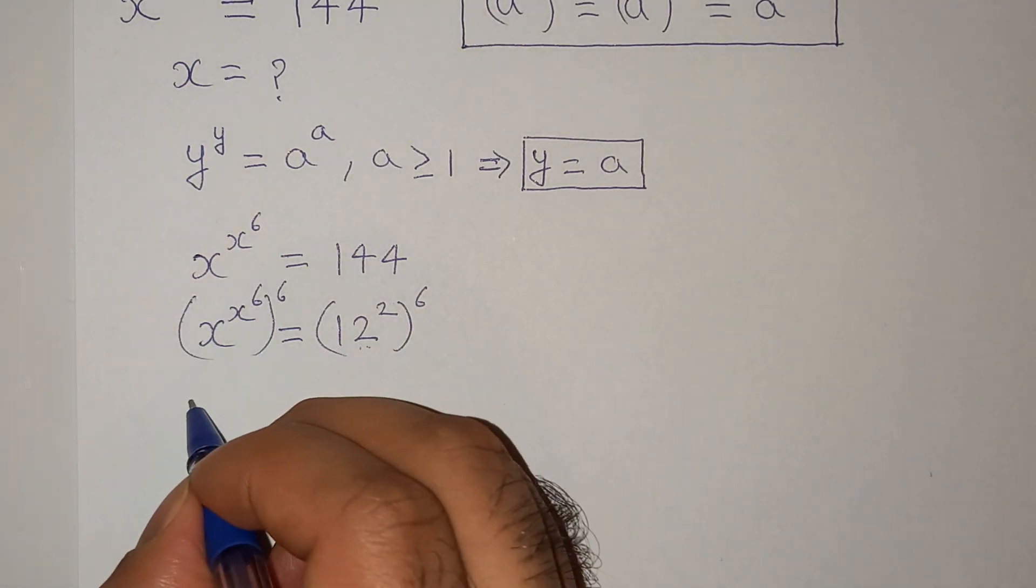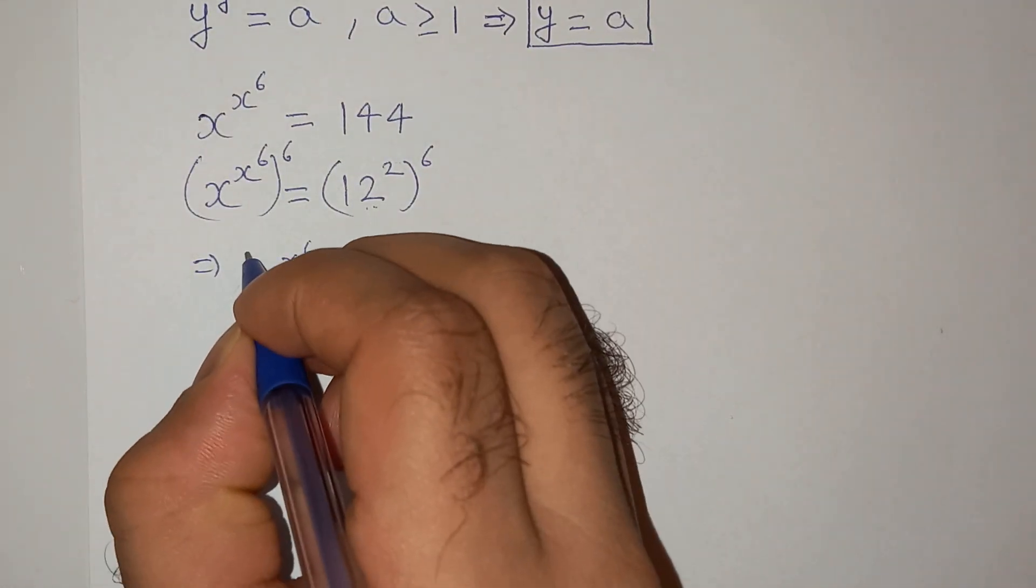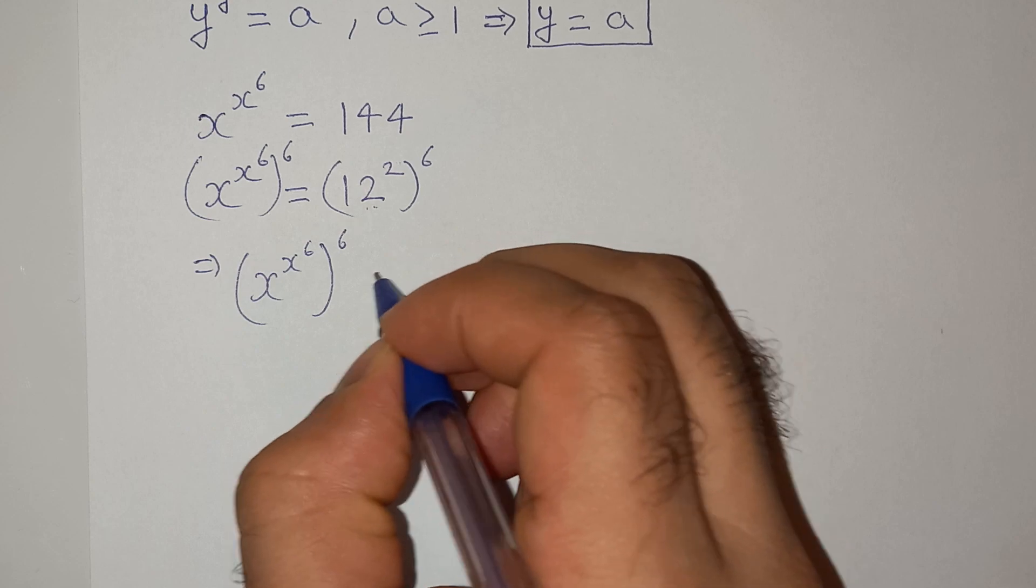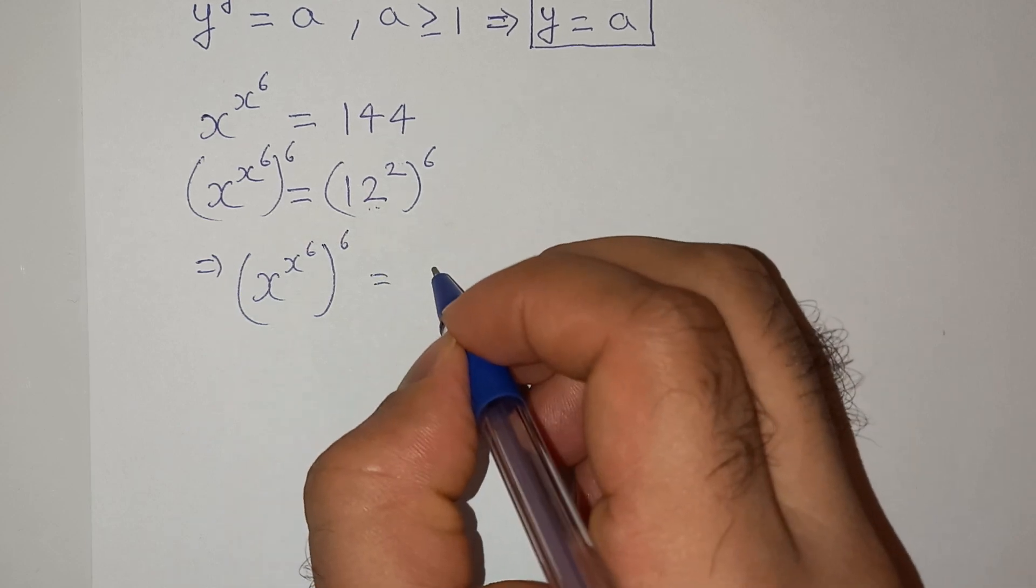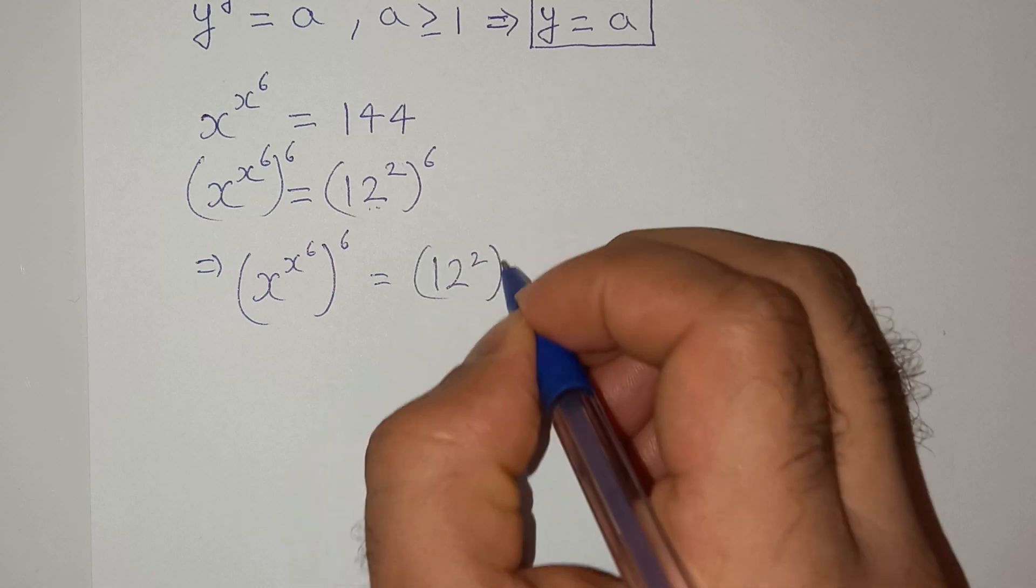So let me write it here again. (x^(x^6))^6 = (12²)^6.